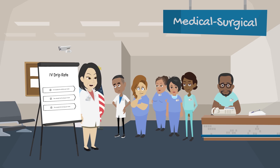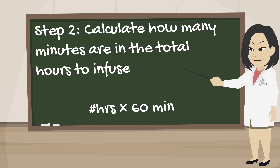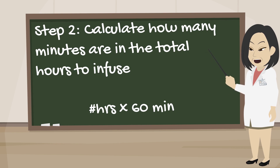You will also need to know the drop factor — that's the number of drops in one milliliter of solution, which is located on the IV tubing package. First, you'll need to know the milliliters per hour to infuse. Next, you'll need to calculate how many minutes are in the total hours to infuse, by multiplying the number of hours times 60 minutes.